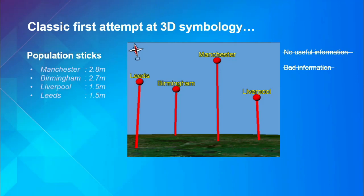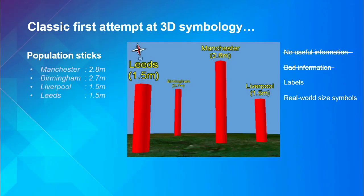So what do you do to get around that? A really simple combination is using labels and real-world size symbols. They're no longer sticks — they're cylinders with a real-world size. Just looking at this as a person you go, 'Leeds, it's fatter, so it's bigger. Birmingham's off in the distance, so that's why it looks smaller.' Everybody understands perspective. You use real-world size symbols and you can kind of get away from the problem where the viewpoint gets in the way.